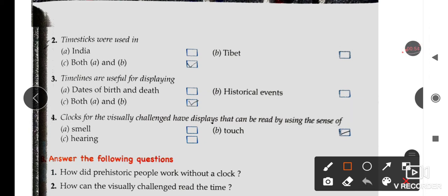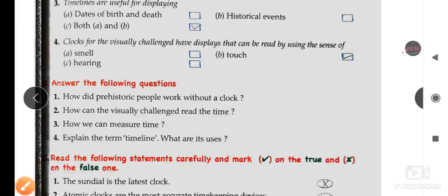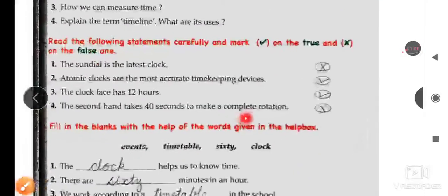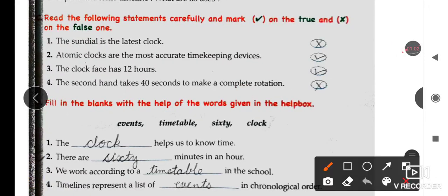Now Part C: Read the following statements carefully and mark tick on the true and cross on the false one. Statement 1: The sundial is the latest clock - this is wrong.